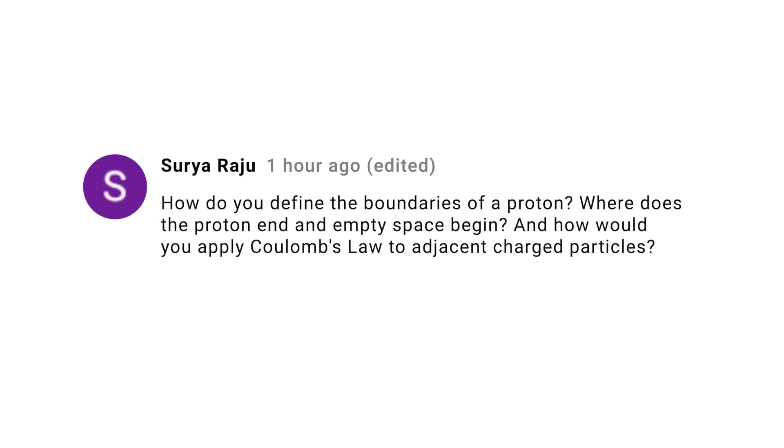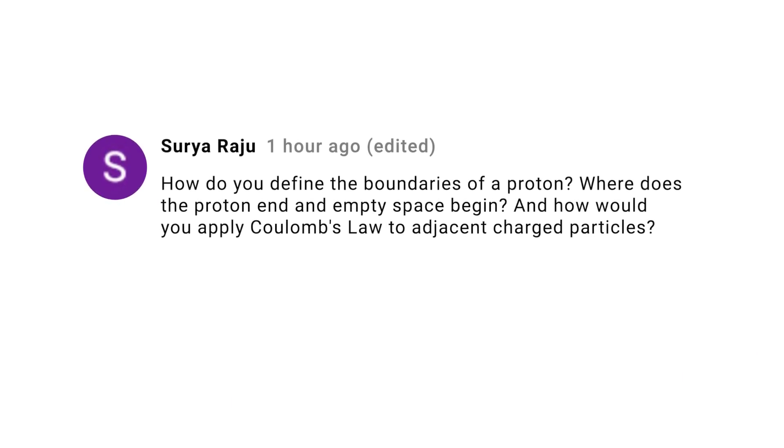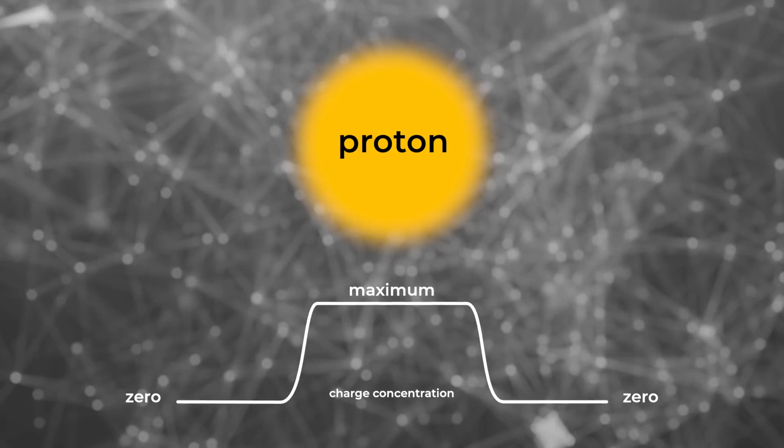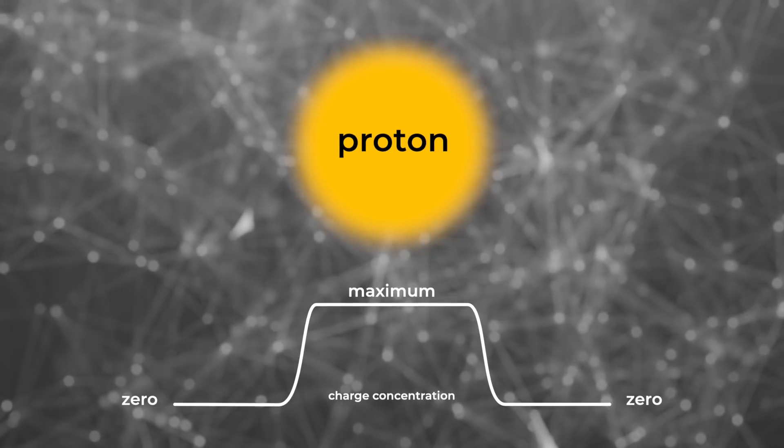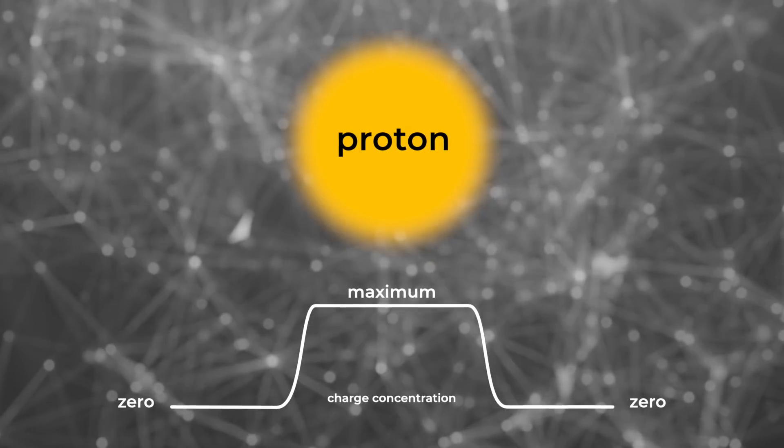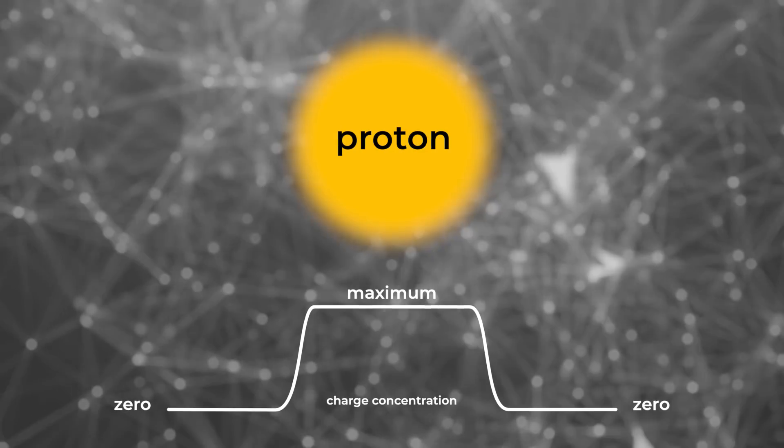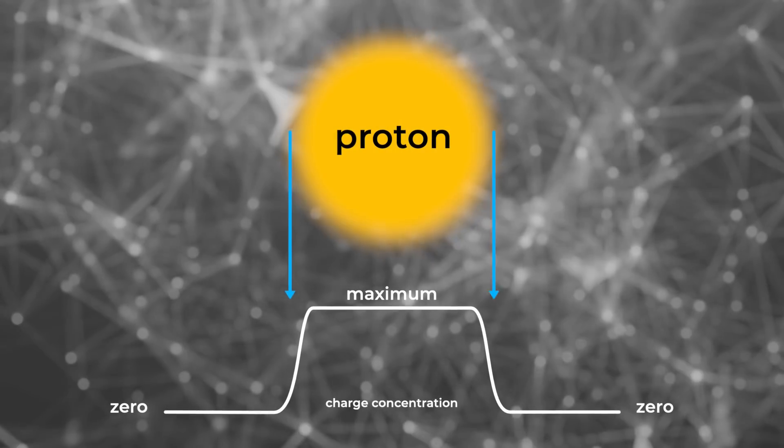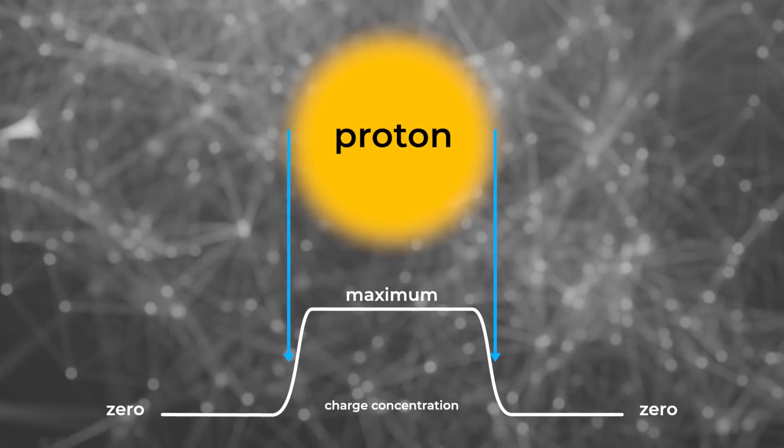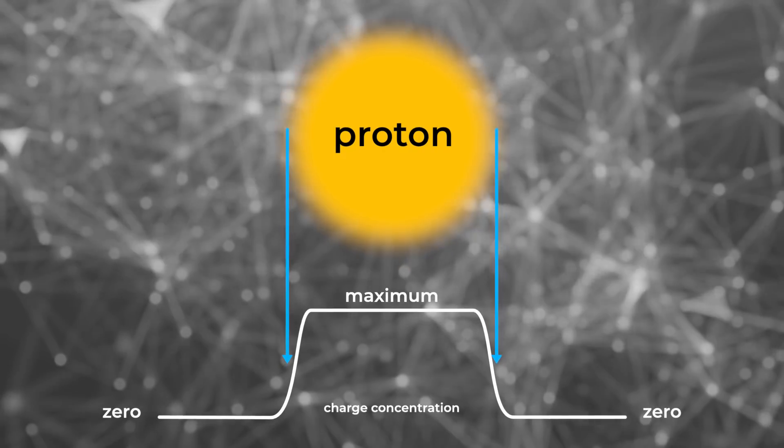Surya Raju asks how we define the boundary of a proton. It's actually similar to how we define the boundary of the Earth's atmosphere. As we go up in altitude, we pick an arbitrary air density and say that the atmosphere stops there. The same thing is true with protons. The quarks inside protons can wander around, but at a certain radius, it becomes less and less likely. The point at which the probability is half the maximum is considered the edge. That's at about 0.8 femtometers.